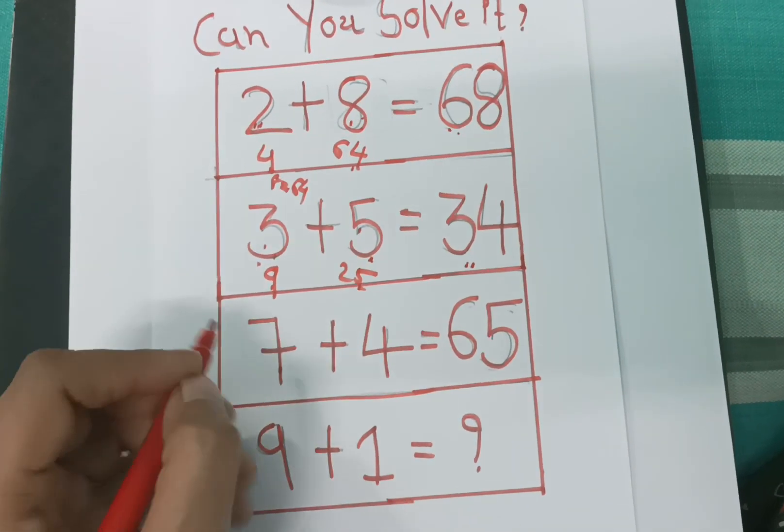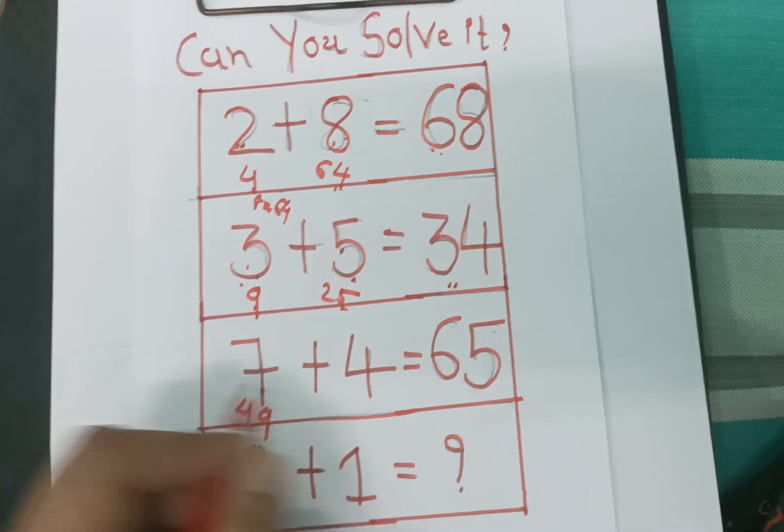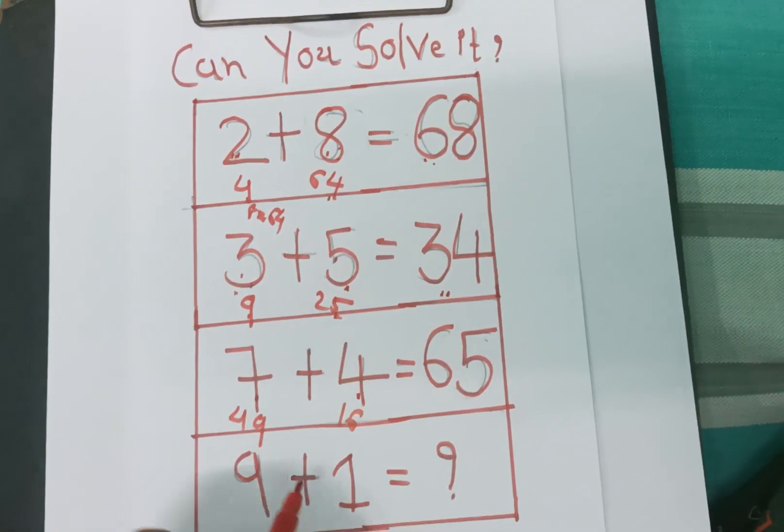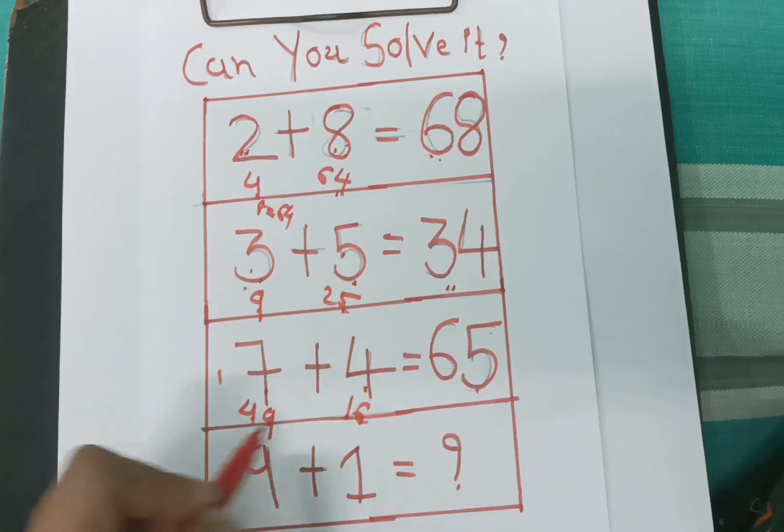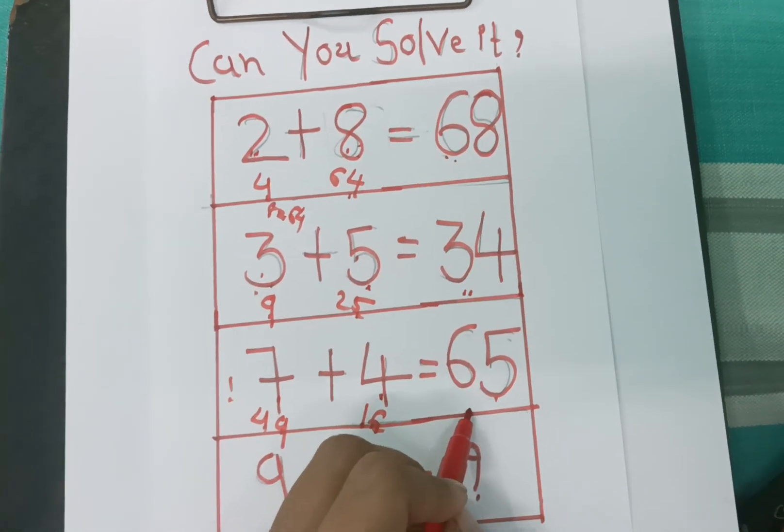Here 7 square is 49, and 4 square is 16. 49 plus 16 is 65. So, the answer is here.